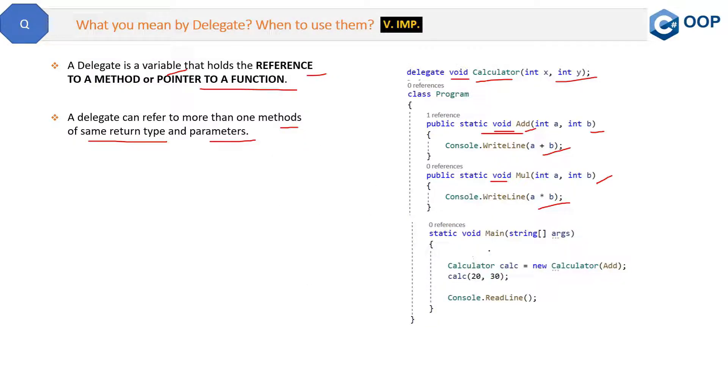Inside the main method we can instantiate this Calculator delegate like you instantiate a class. We can use this calc as an object. So this is the instance of this delegate. And here, while instantiating, you can pass the method as the parameter.